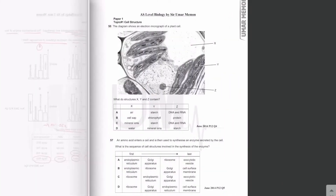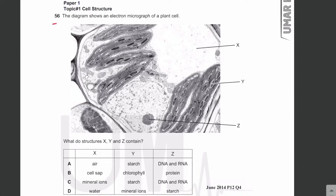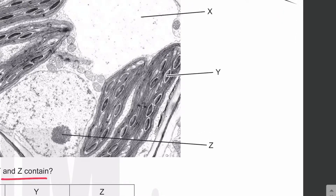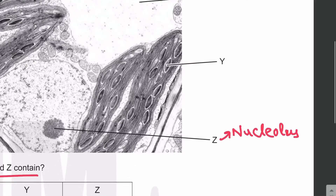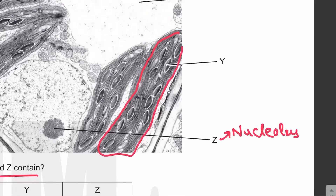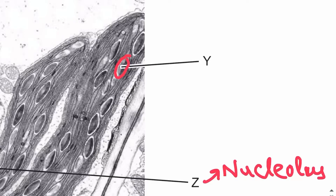MCQ number 56: the diagram shows an electron micrograph of a plant cell. What do structures X, Y, and Z contain? Z is inside the nucleus and is the nucleolus — loops of DNA that synthesize ribosomal RNA. The structure visible here is the chloroplast, since this is a plant cell, and Y within the chloroplast are starch grains, which appear dark.